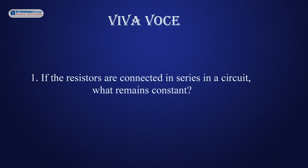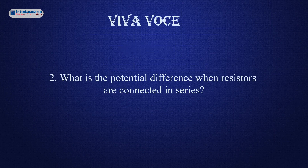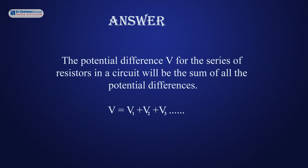Based on this experiment I will ask a few questions. The first question is: if the resistors are connected in series in a circuit, what remains constant? The answer is current. The second question is: what is the potential difference when resistors are connected in series? The answer is: the potential difference V for the series of resistors in a circuit will be the sum of all the potential differences — V equals V1 plus V2 plus V3 and so on.